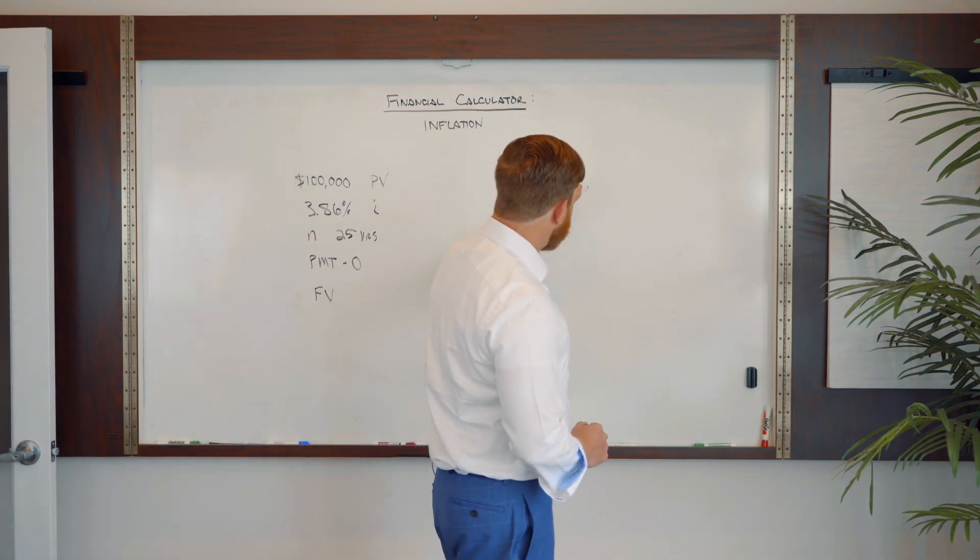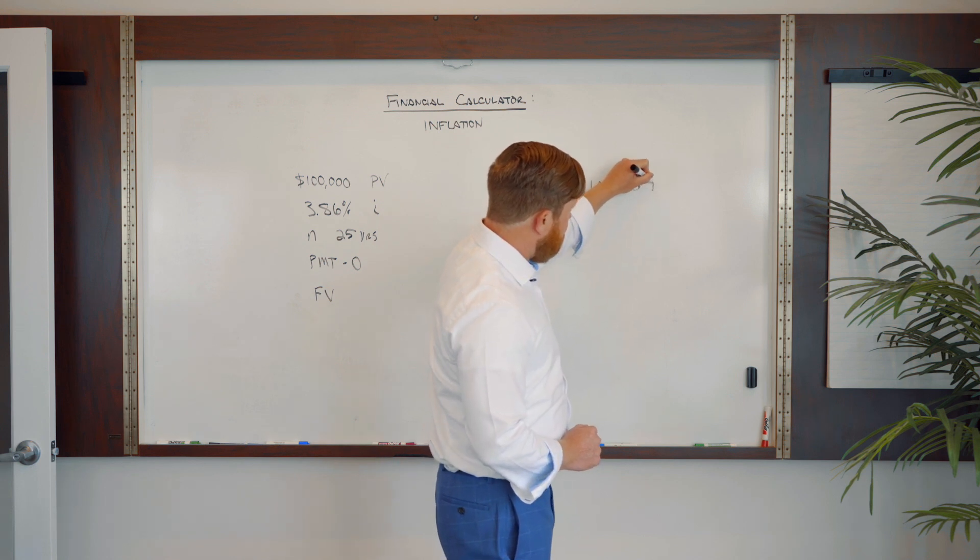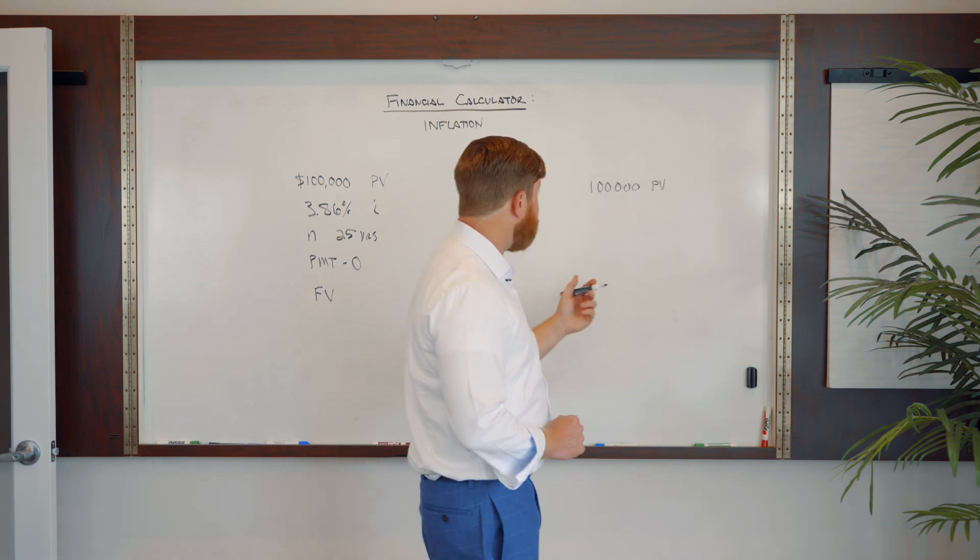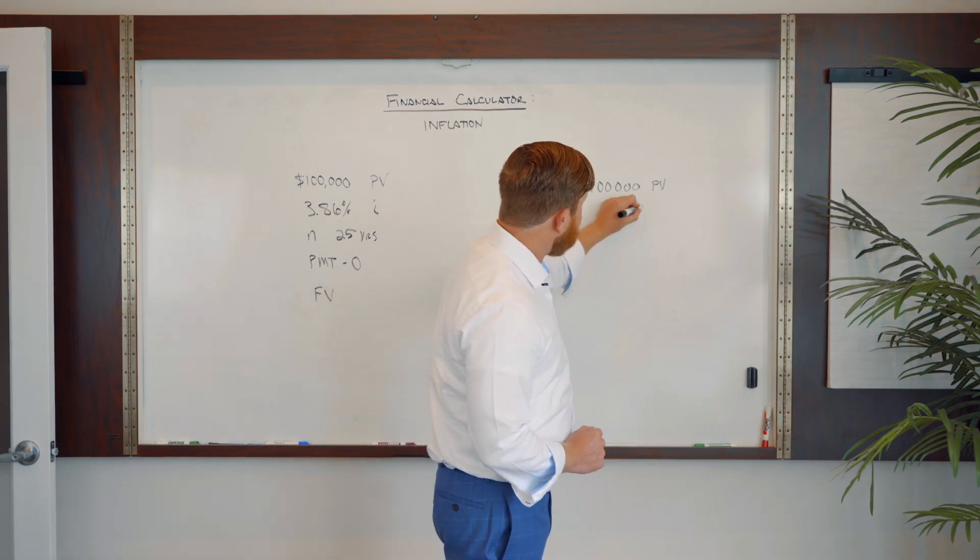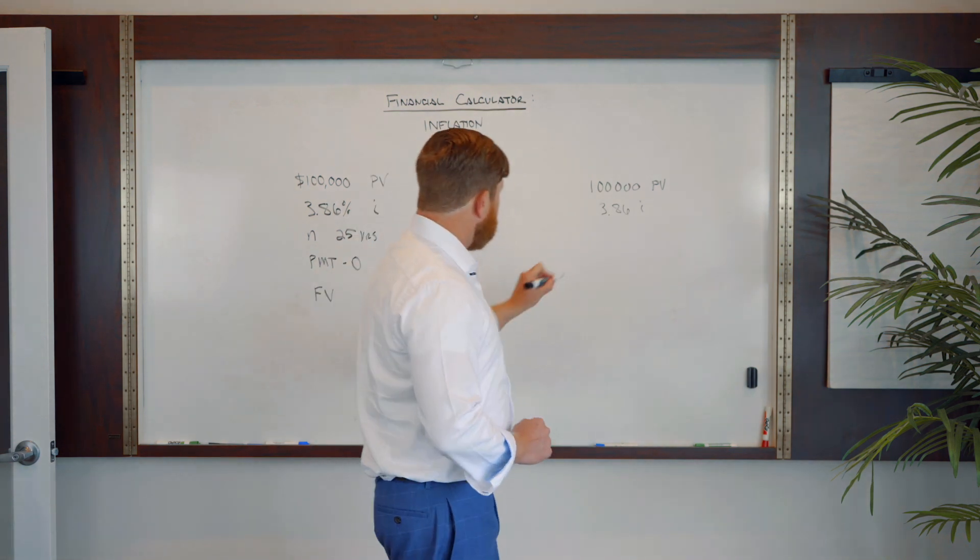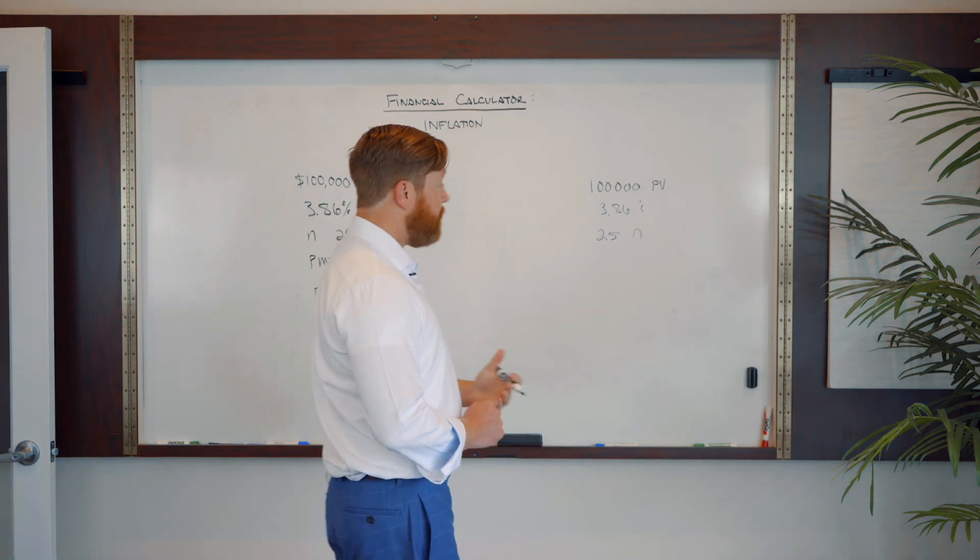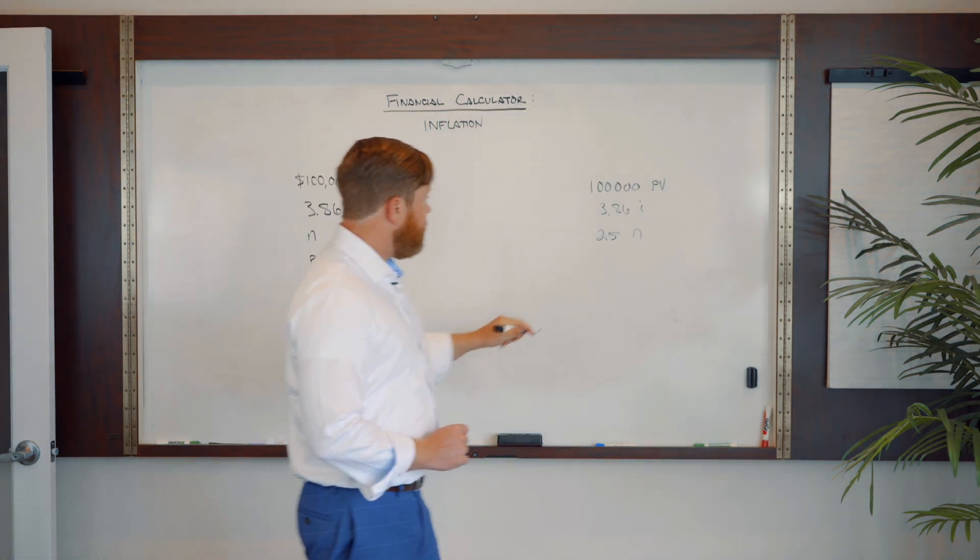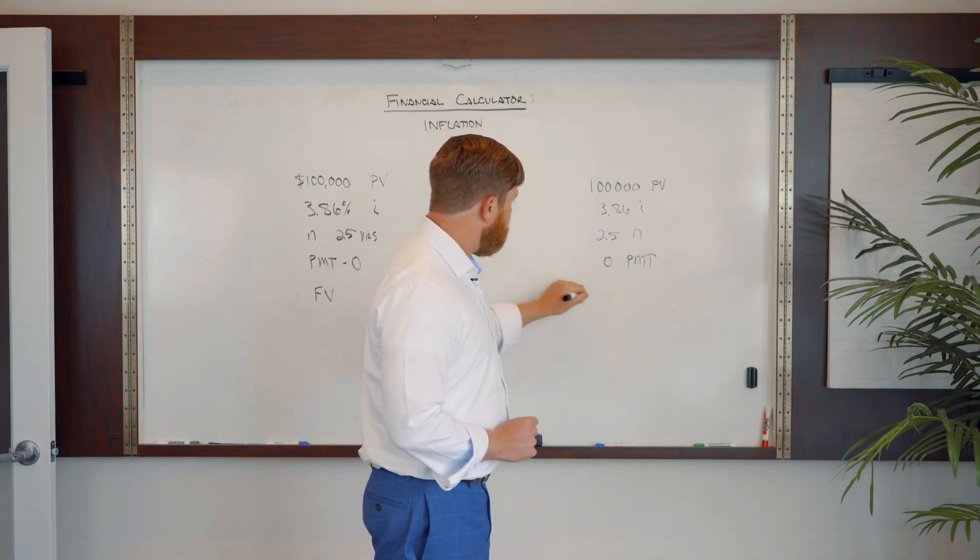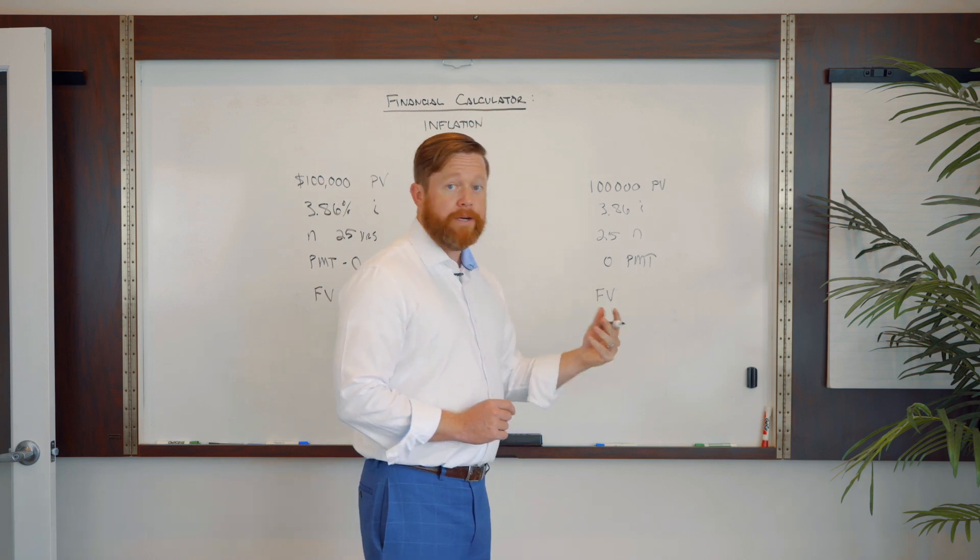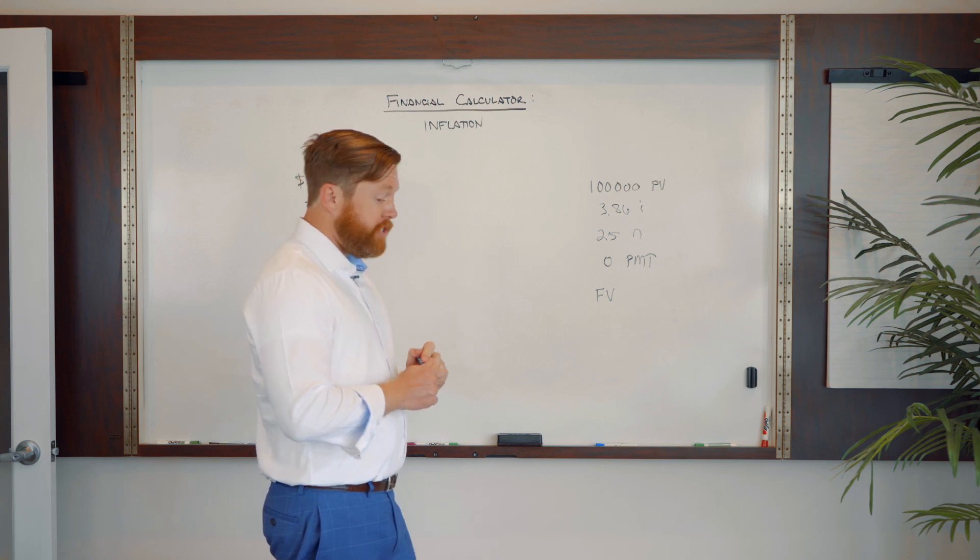So first thing we're going to jump into is we're going to say 100000 and that's PV present value. Then we're going to say 3.86 I for our interest rate, 25 in for number of periods that we're going to inflate this amount, and then zero payment. Then we will hit future value and we will see what a hundred thousand dollars looks like 25 years from now with historical inflation rates.